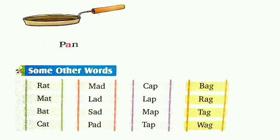These are 'A' sound words. Some other words — let's read them aloud. Are you ready to read after me? R-A-T, rat. M-A-T, mat. B-A-D, bad. B-A-T, bat. C-A-T, cat. M-A-D, mad. L-A-D, lad. S-A-D, sad. B-A-D, bad.